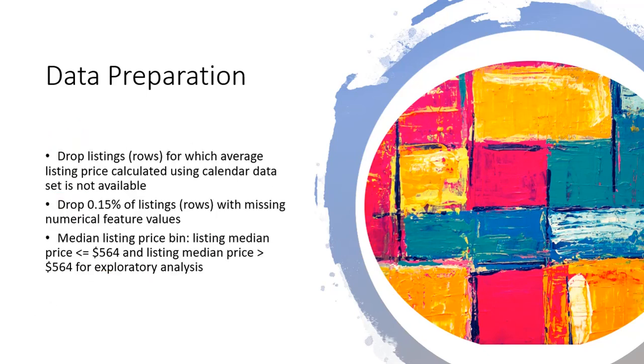Further in data preparation, we'll drop listings for which the average listing price is not available. We'll drop 1.5% of listings with missing numerical feature values. And we are going to create two bins. And this is the median listing price bin. One will be less than or equal to $564, and the other will be greater than $564.